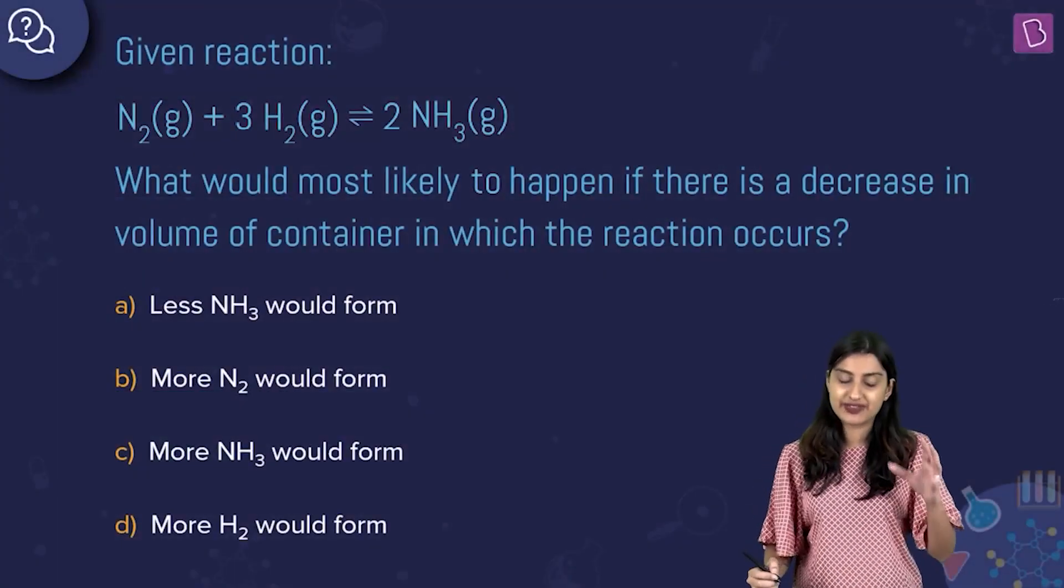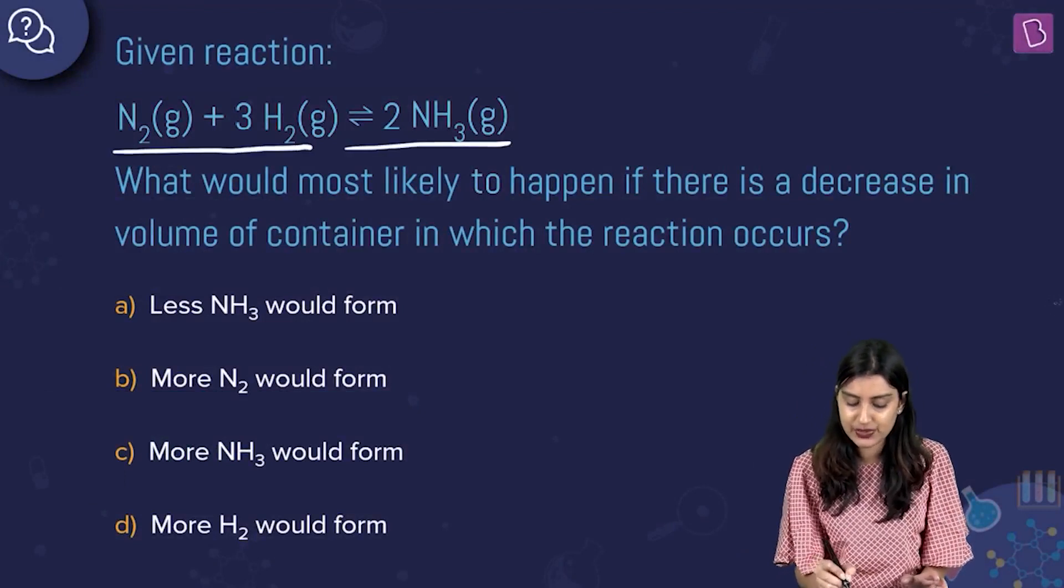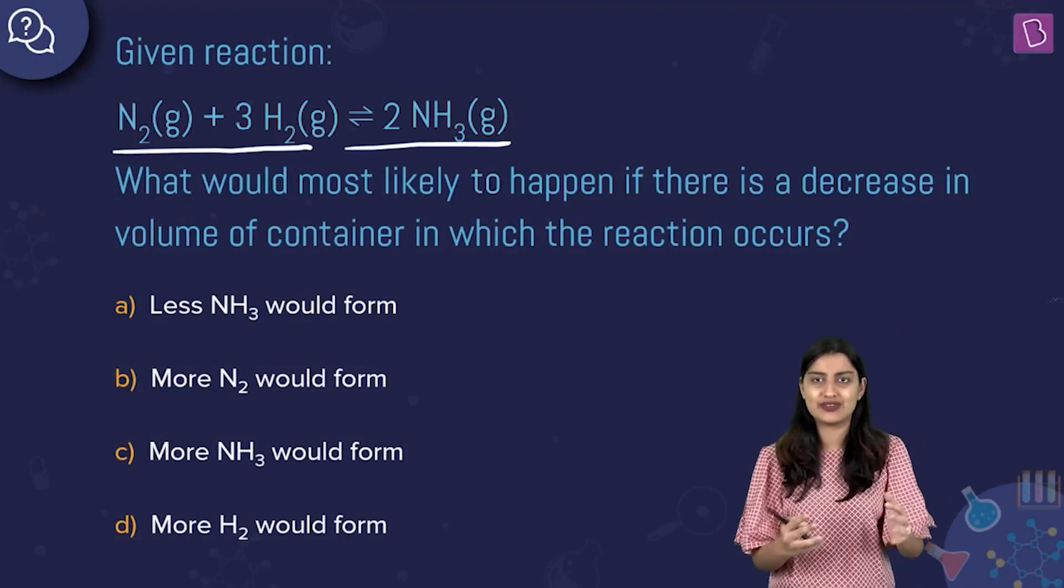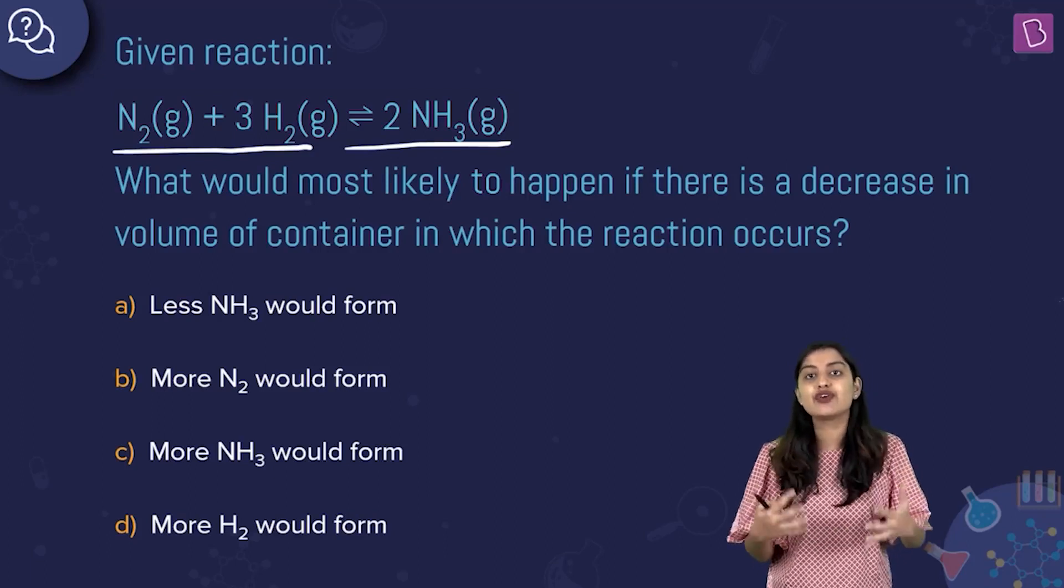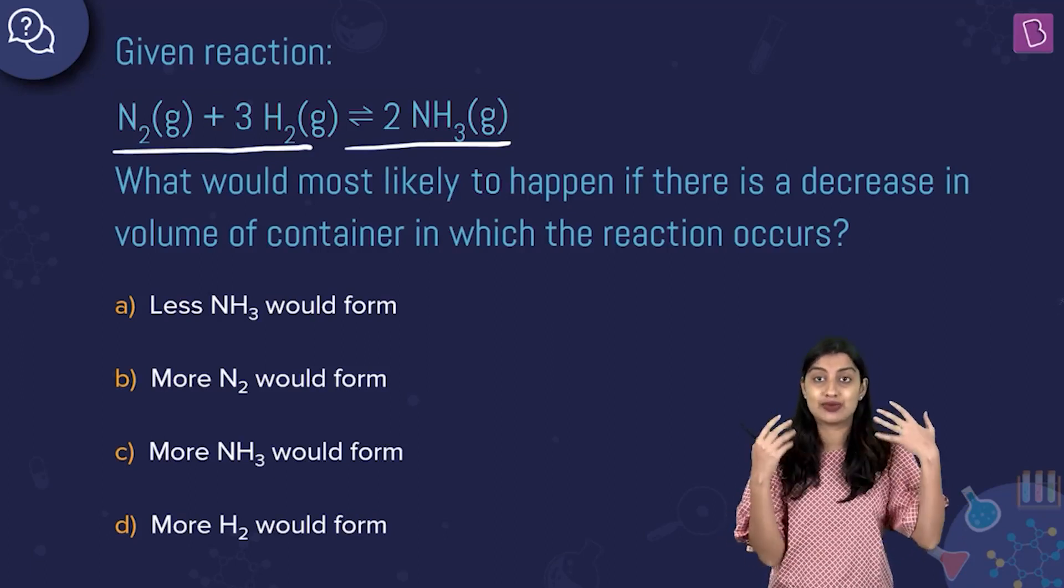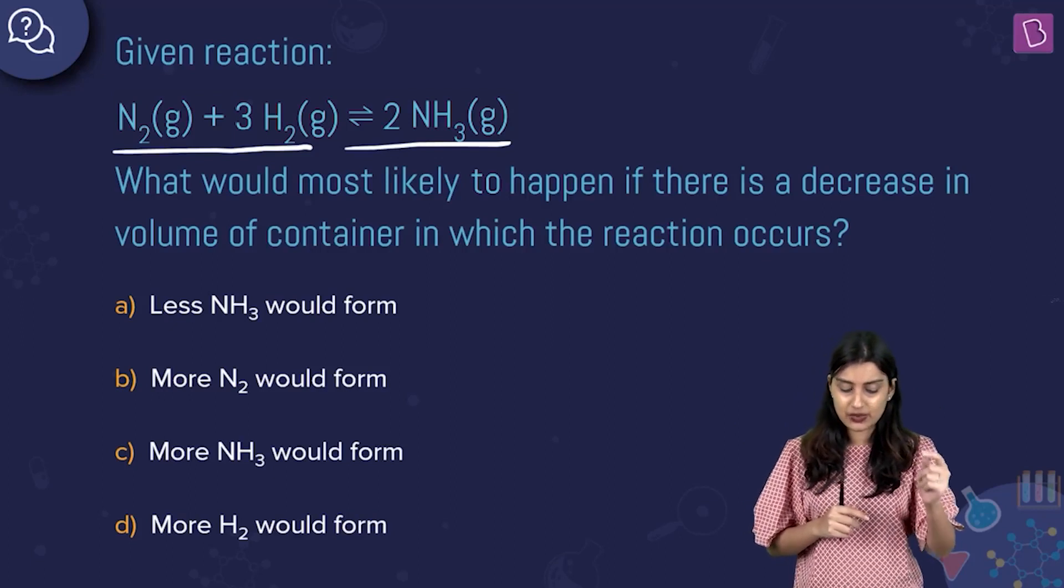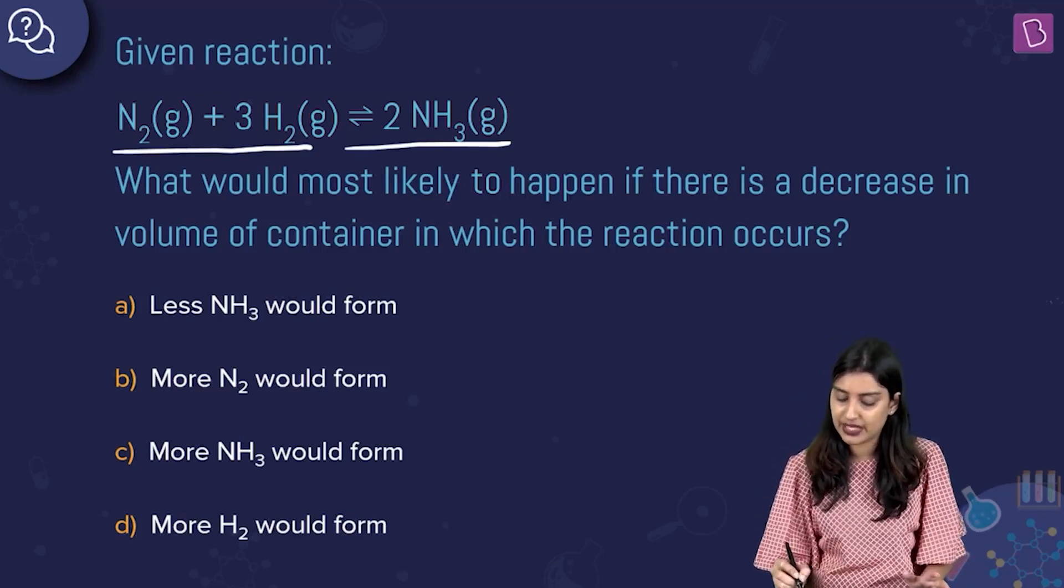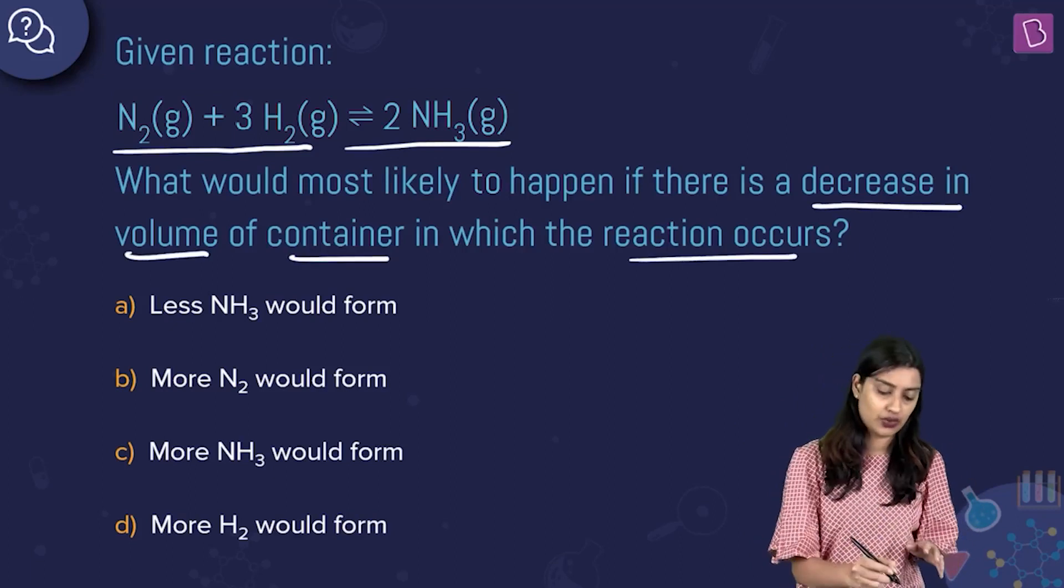Okay. So here you have a given reaction, which is N2 plus 3H2 is in equilibrium with 2NH3. This is honestly one of the most scoring chapters that you have in chemistry. Also a very important chapter in terms of building your fundamental concepts for chapters like ionic equilibrium, which in turn leads to chapters like electrochemistry. Here they're saying what would most likely happen if there is a decrease in volume of container in which the reaction occurs.